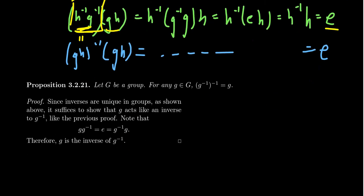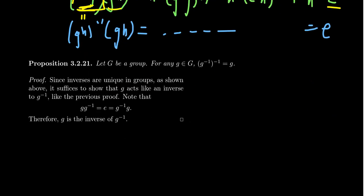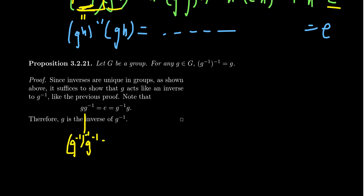Let's look at one other corollary of the uniqueness of inverses. In any group, if you take an element G, the double inverse is the original element again: G inverse inverse equals G. This follows by inverse uniqueness. If you take G times G inverse, that gives you the identity because G inverse is the inverse of G. But G inverse is an element of the group, so it should have an inverse element. Since G is already doing that job, uniqueness implies that G inverse inverse actually is G again. The simple statement that inverses are unique can be a powerful tool to prove more powerful theorems and corollaries about properties of groups.